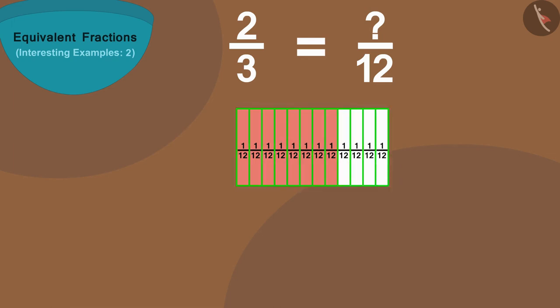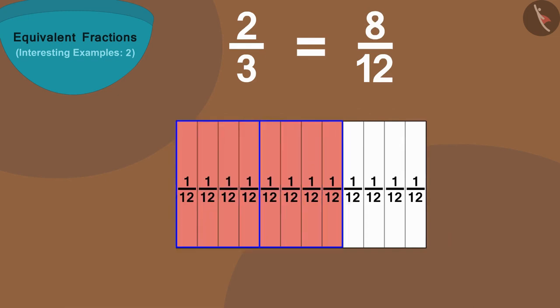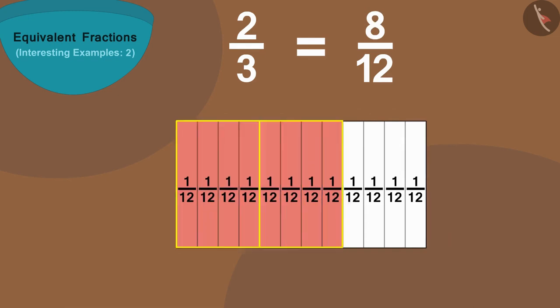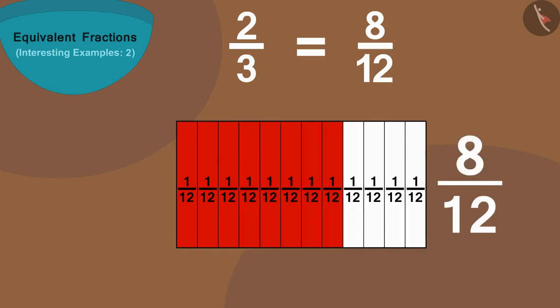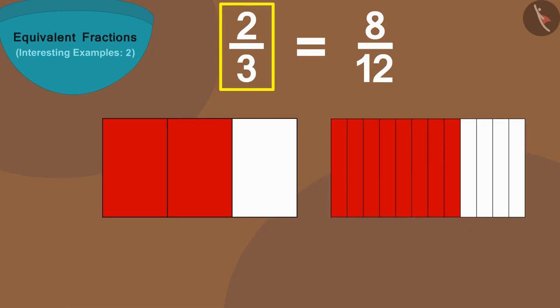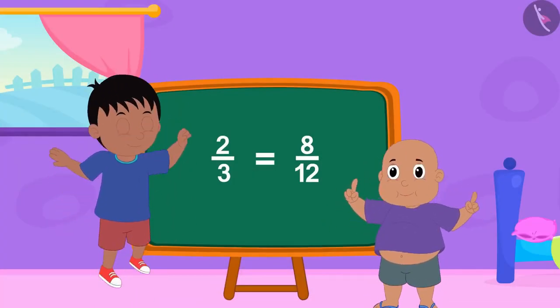And if we look closely, eight parts of the second strip is equal to two colored parts of the first strip. Thus, two by three is equal to eight by twelve.